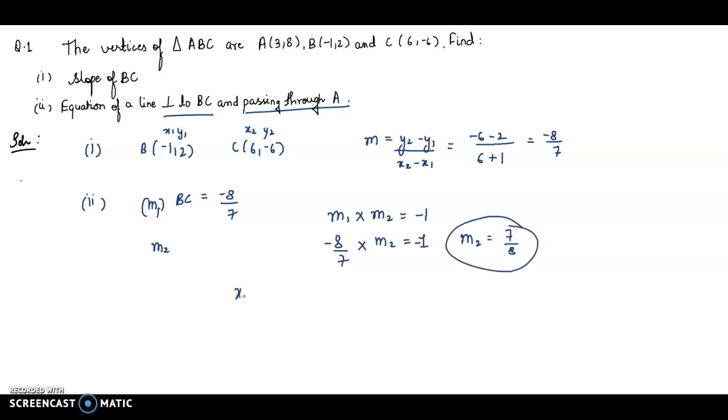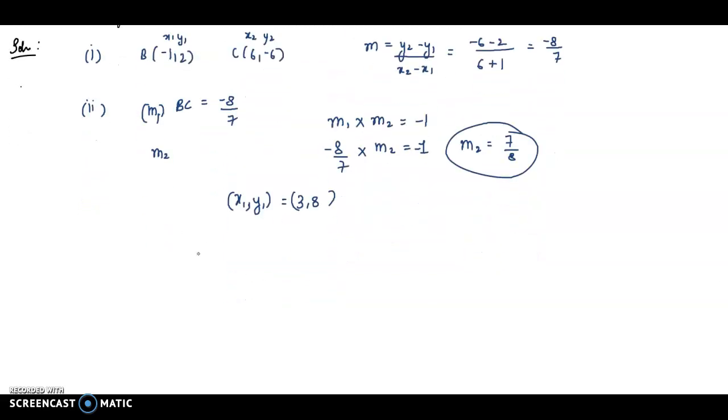And passing through A. Here x₁, y₁ will be (3, 8), that is coordinates of A. Now we have this formula: y - y₁ = m(x - x₁). Since we have to find the equation of a line that is perpendicular to BC and passing through A, y - 8 = 7/8(x - 3). On solving this, you will get 7x - 8y + 43 = 0. This is the equation of the line.